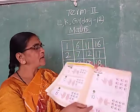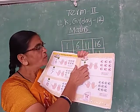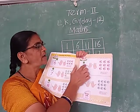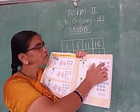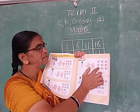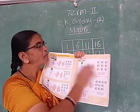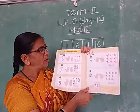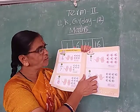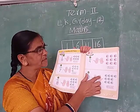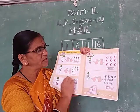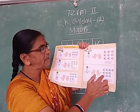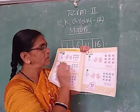Next number 9. Count the fingers: 1, 2, 3, 4, 5, 6, 7, 8, 9 — 9 fingers. 1, 2, 3, 4, 5, 6, 7, 8, 9 — 9 balls. Next number 10. Count the fingers: 1, 2, 3, 4, 5, 6, 7, 8, 9, 10 — 10 fingers. 1, 2, 3, 4, 5, 6, 7, 8, 9, 10 — 10 balls.